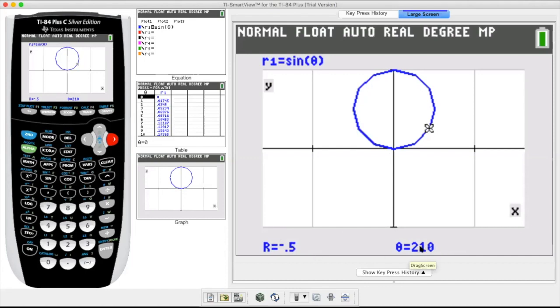That is like a reference angle of 30. So 30, you're back to 0.5. But again, you know, it's just, it's a negative value because of sine at 210 degrees.